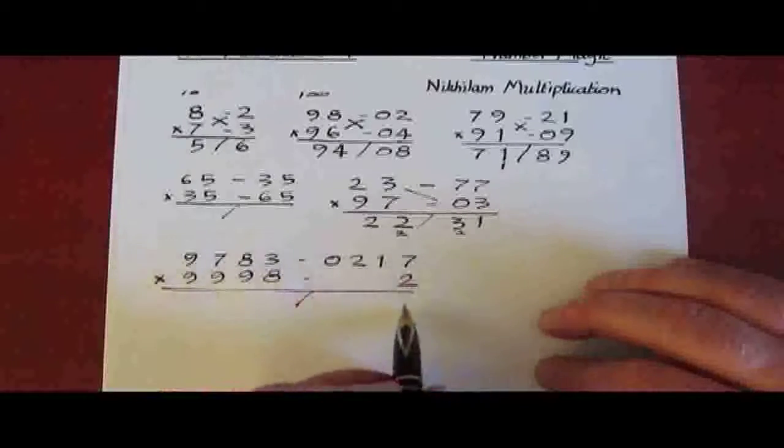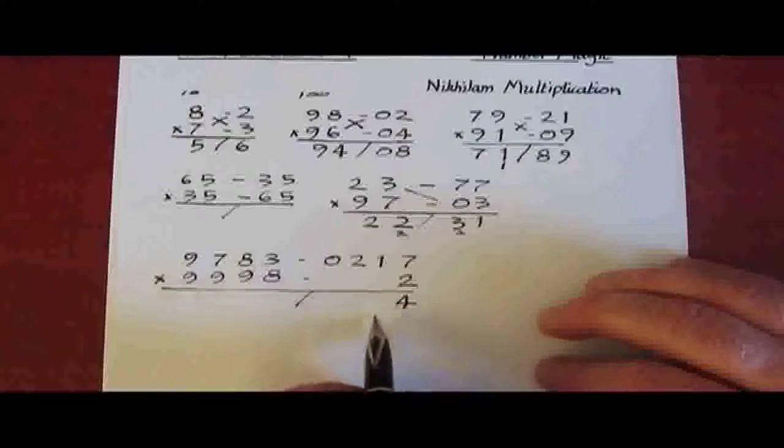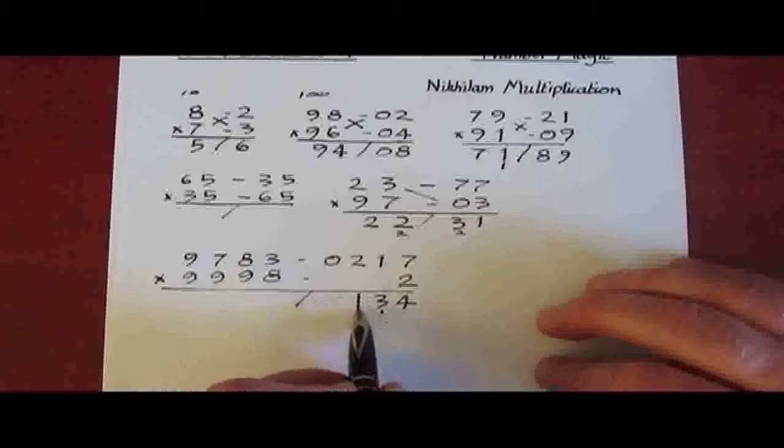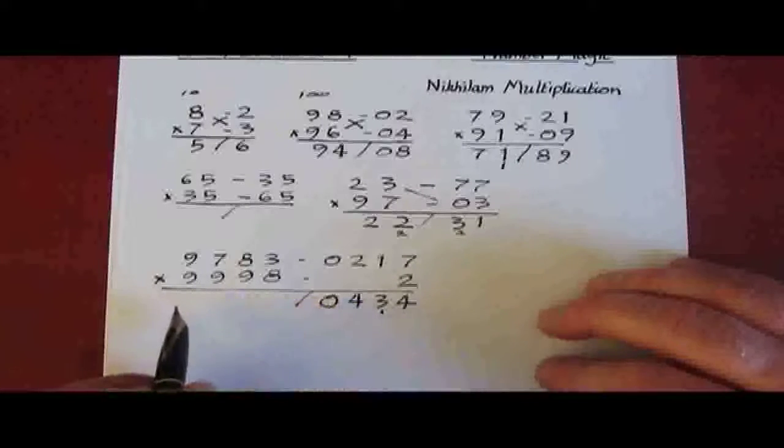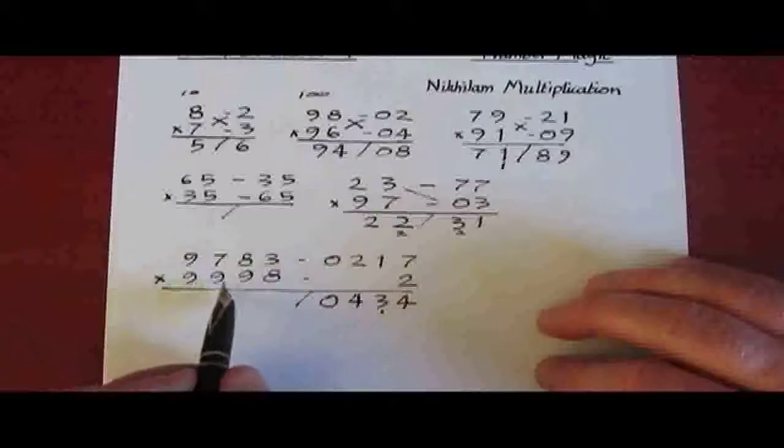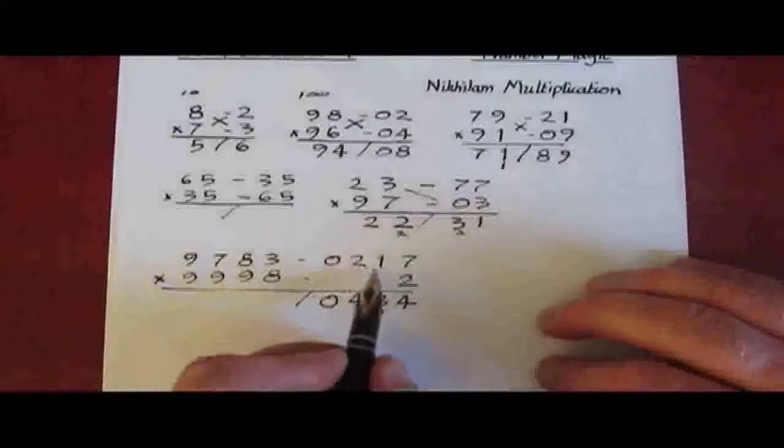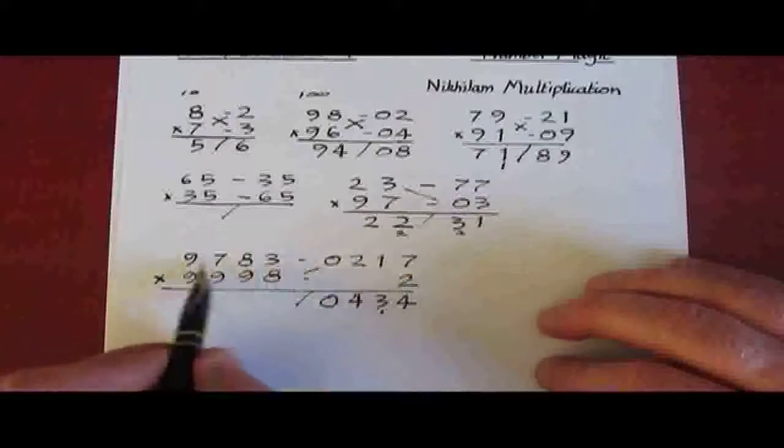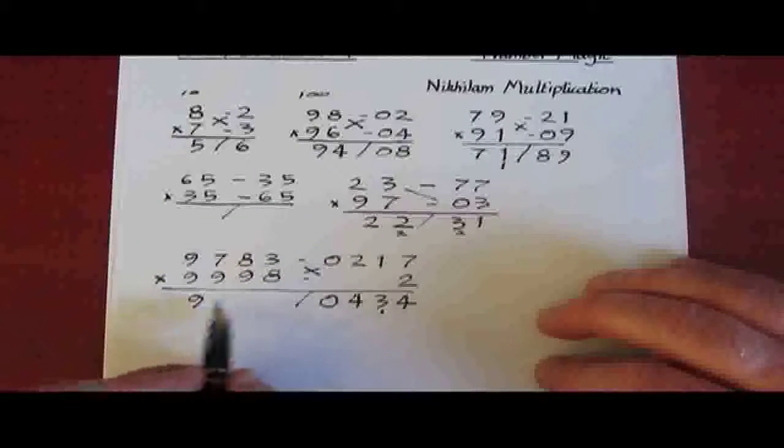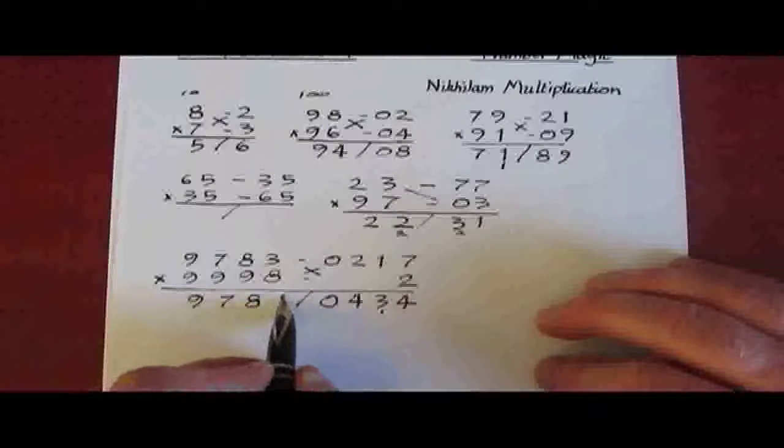So now we just multiply on the right: 2 sevens are 14, 2 ones are 2 add 1 is 3. There's 4 and a 0. And now we can cross subtract. We can go either way: 9998 take away 217, or 9783 take away 2. Well I think I prefer that way. And so we get 9781.